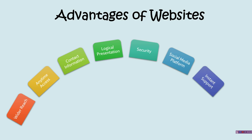Next is instant support: many websites provide 24x7 online support to their users and customers. The last advantage is business information: it is an effective way of communicating important business information to the general public or specific target readers with the help of websites. These were the advantages of websites: wider reach, anytime access, contact information, logical presentation, security, social media platform, instant support, and business information.